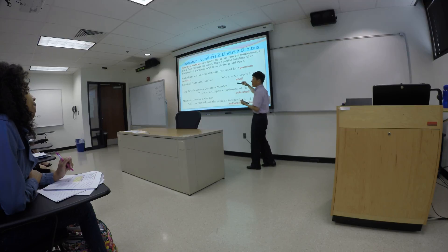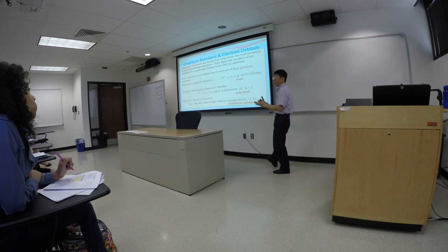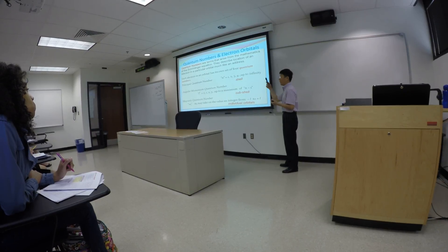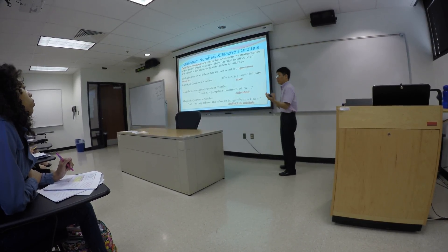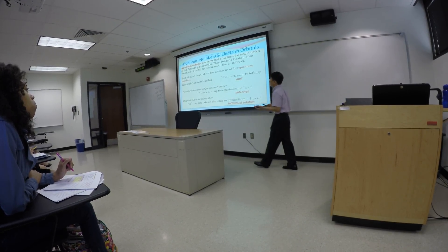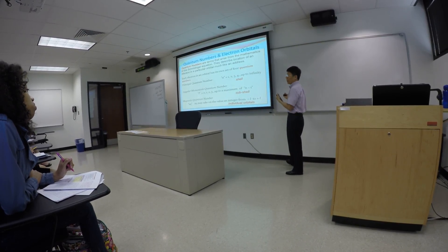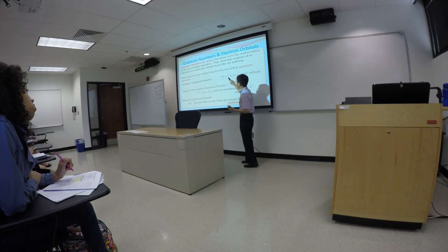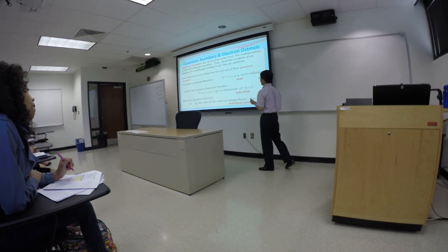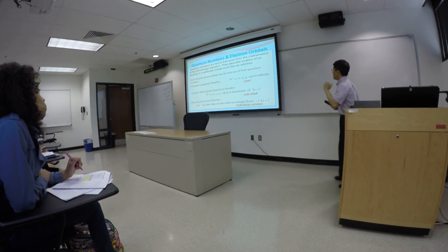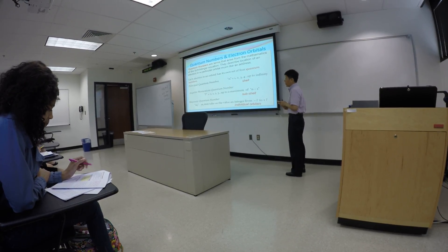The principal quantum number n equals one, two, three, four — just like steps on a ladder, representing energy levels. If n is a higher number, that electron has higher energy. Electrons on n equals one have lower energy than electrons on n equals two, three, or four. So n determines the main energy level, with the electron on n equals one having the lowest energy.